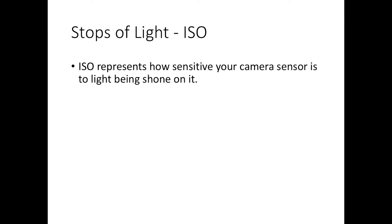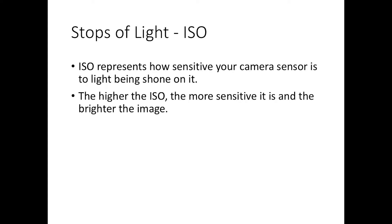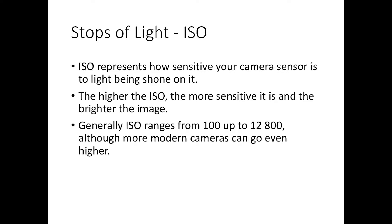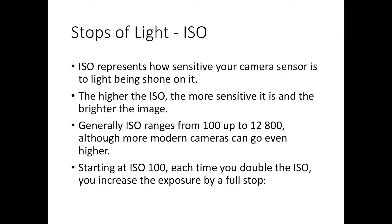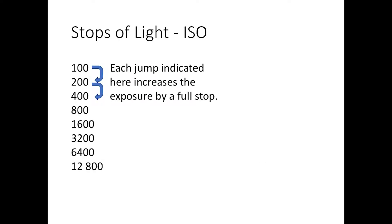For ISO, it represents how sensitive your camera sensor is to the light being shone on it. The higher the ISO number, the more sensitive it is, and the brighter the image will be. Most cameras have an ISO range of 100 up to 3200 or 6400 on older cameras, with most modern cameras going to at least 12800 or higher. ISO is easy to understand: starting at 100, each time you double the ISO you increase the exposure by a full stop. So 100, 200, 400, 800, and so on — each of those jumps indicates an increase in exposure by a full stop of light.